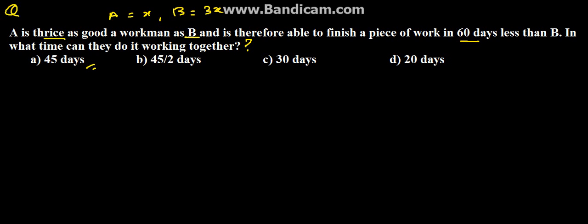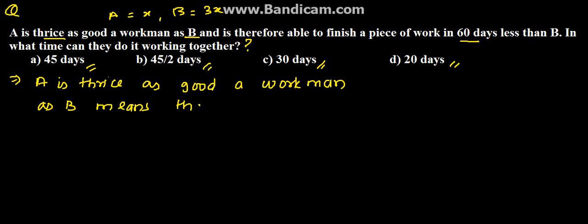Options given are 45 days, 45 by 2 days, 30 days, and 20 days. Here we can write down in solution that A is thrice as good a workman as B, which means that if A does a piece of work in 1 day, then B does in 3 days.